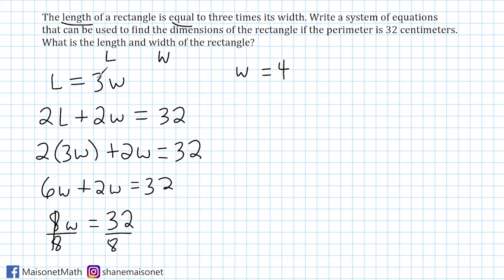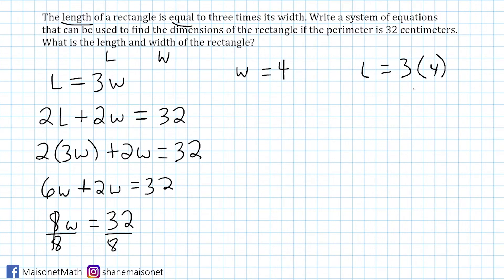We know that the length is equivalent to 3 times the width. Because the width is 4, the length is going to be 12. To be more formal, we can rewrite that equation and substitute 4 in for W, which gives us the length equal to 12. So the width of the rectangle is 4 and the length is equal to 12.